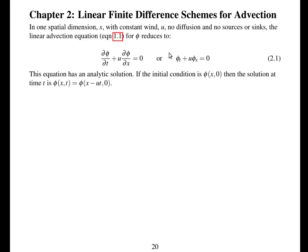In one spatial dimension x, with constant wind U and no diffusion or sources or sinks of a variable phi in the atmosphere, the linear advection equation — equation 1.1 in these notes — can be simplified to: d phi by dt plus U d phi by dx equals zero. Or if you want to represent derivatives just with underscripts, that's phi_t plus U phi_x equals zero.